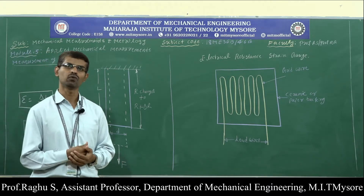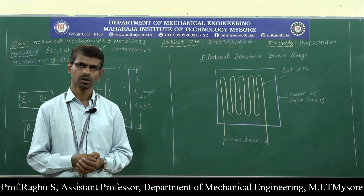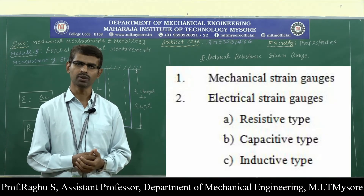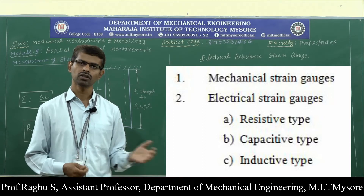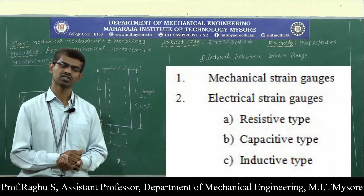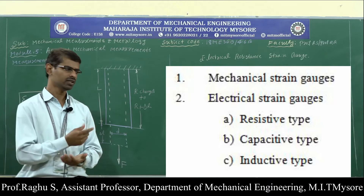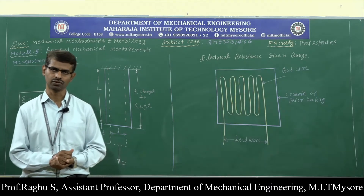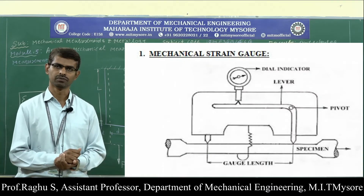As you can see in this diagram, we have mainly two types: mechanical strain gauge and electrical strain gauge. In the electrical strain gauge, we have three types: resistance type, inductance type, and capacitance type. Now let us discuss one by one. The first one is mechanical strain gauge, as shown in the figure.